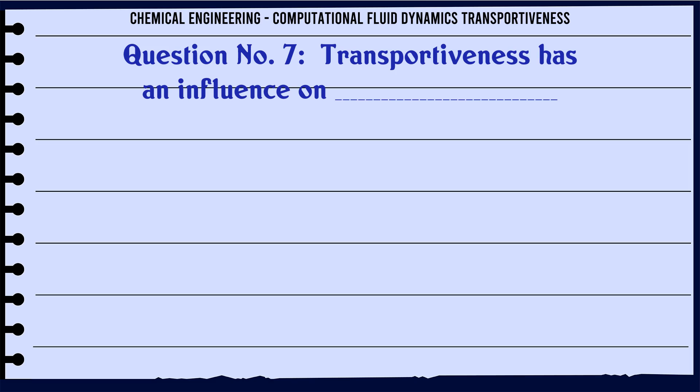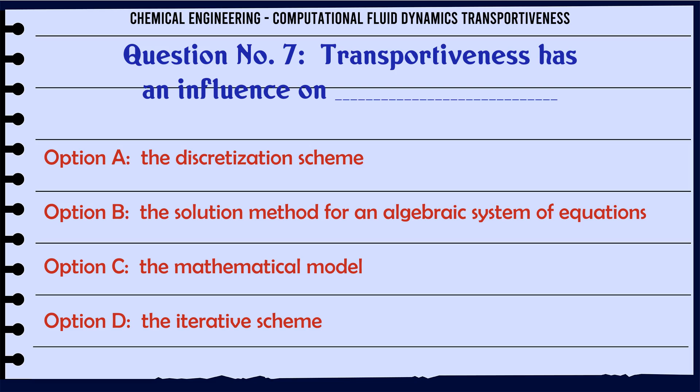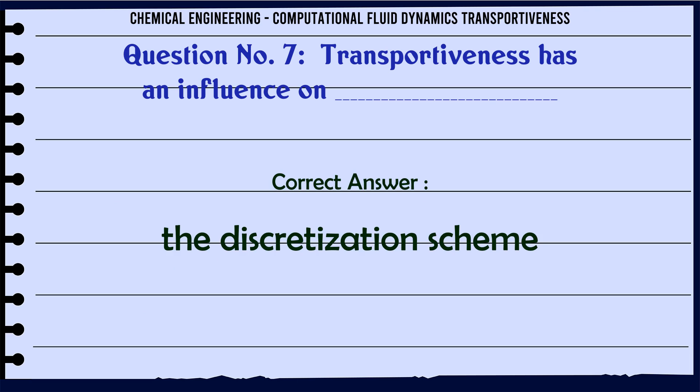Transportiveness has an influence on: A. The discretization scheme. B. The solution method for an algebraic system of equations. C. The mathematical model. D. The iterative scheme. The correct answer is the discretization scheme.